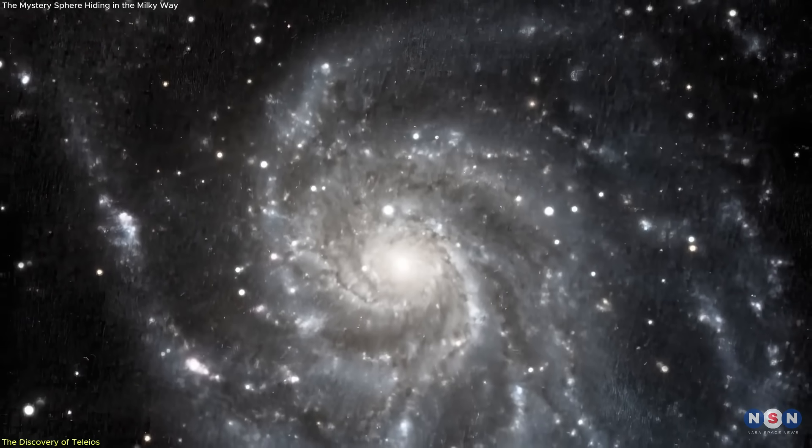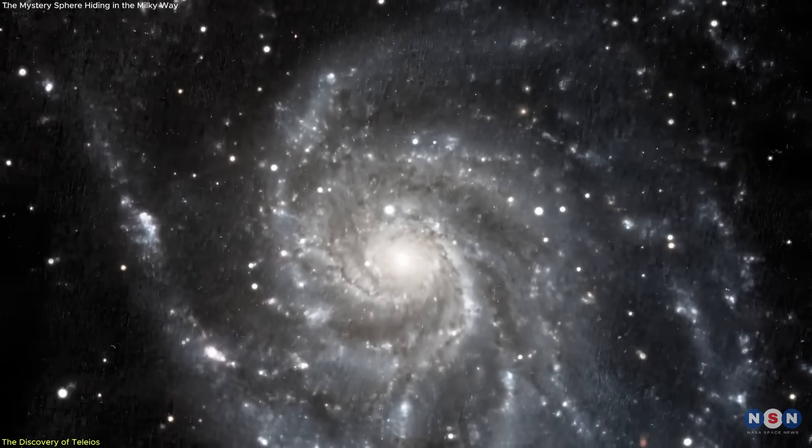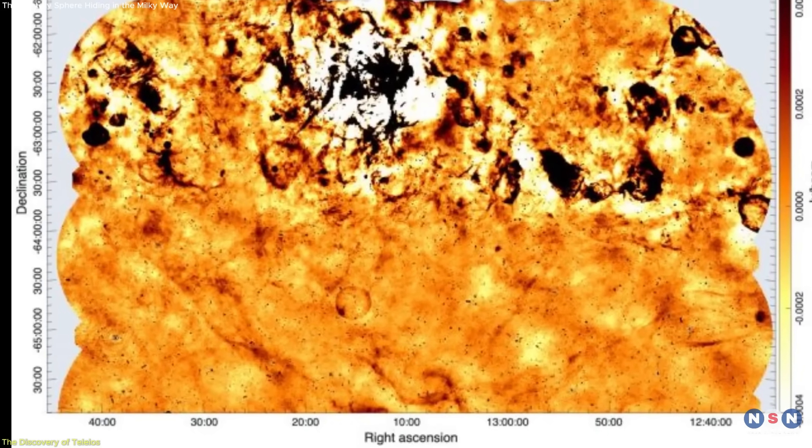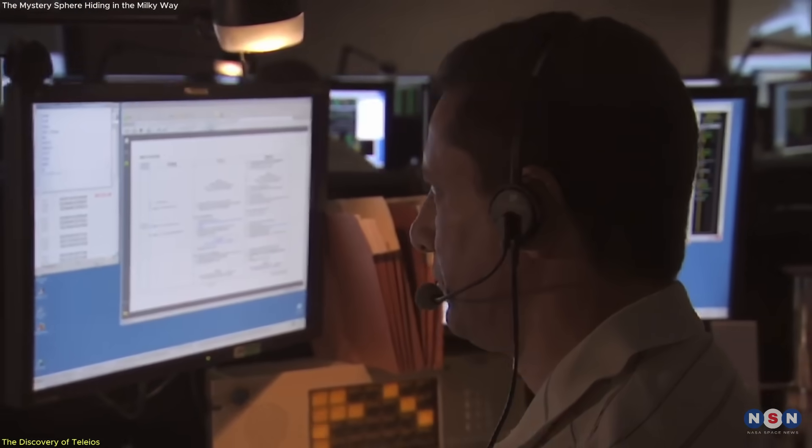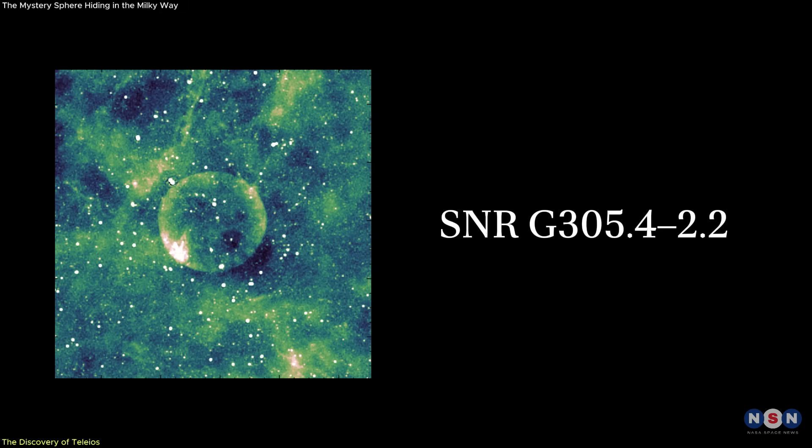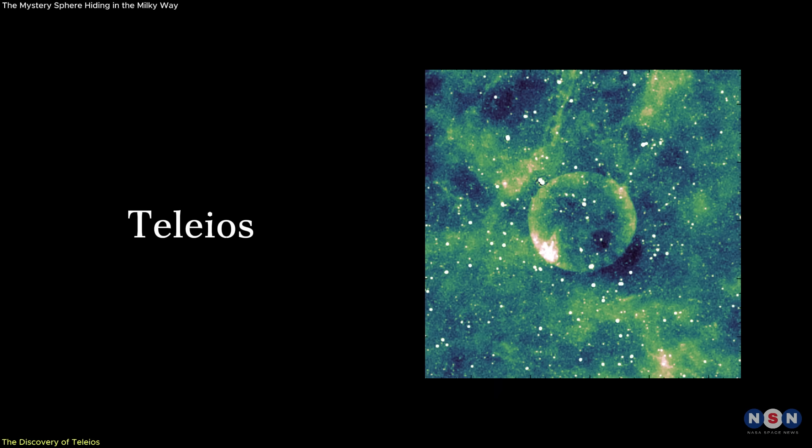Nestled in a remote corner of the Milky Way was a faint but unmistakably circular structure. It wasn't labeled, it wasn't expected, and it looked too perfect to ignore. The team had stumbled upon what would later be designated SNRG 305.4-2.2, but they gave it a more fitting name: Teleos, the Greek word for perfect.